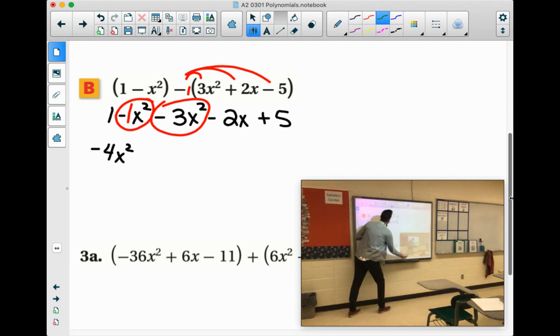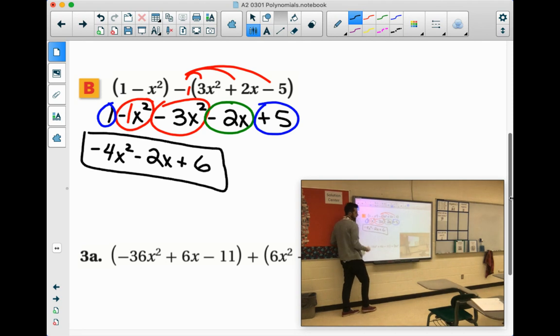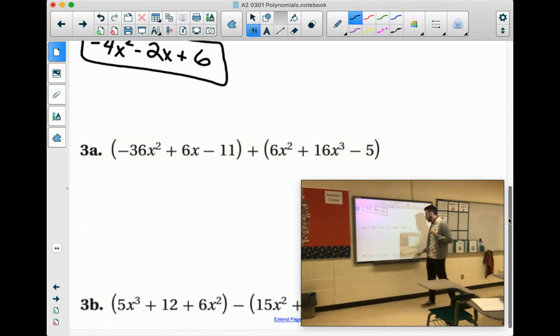Then we go to our x's. All we have is this negative 2x. And then our regular numbers, we have 1 plus 5 is 6. Make sure it's in standard form. Make sure you can't combine anything else. And then you're good to go.